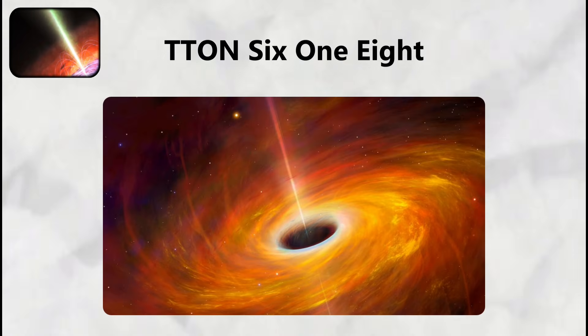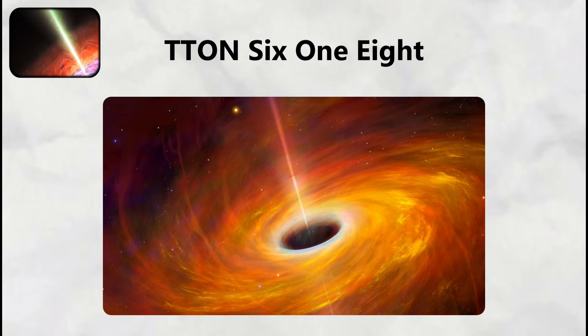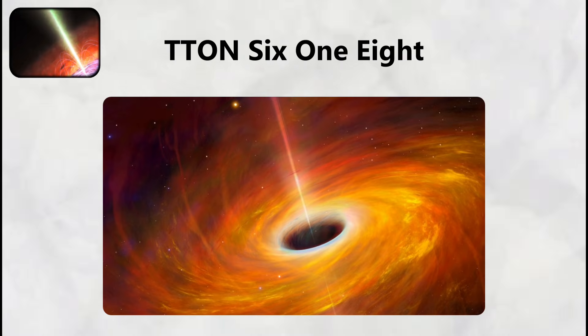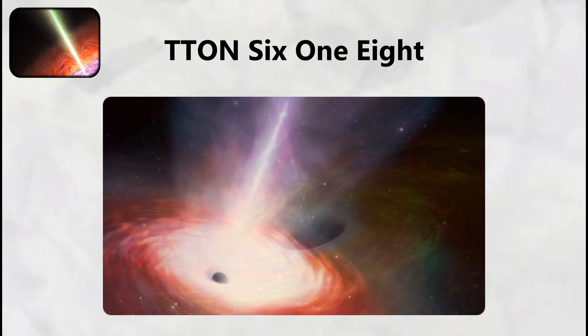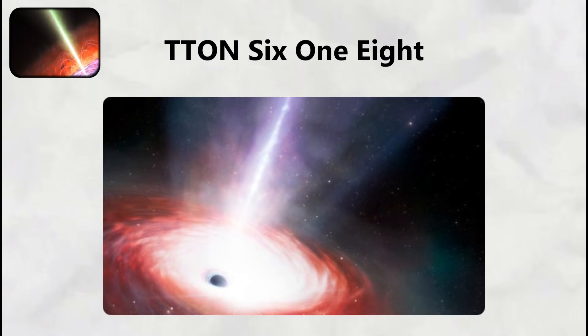The existence of Ton 618 so early in cosmic history suggests that supermassive black holes grew to incomprehensible sizes much faster than current theories predict, implying feeding mechanisms and growth rates that remain completely mysterious to modern astrophysics.